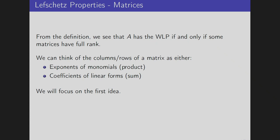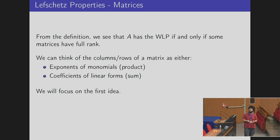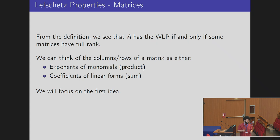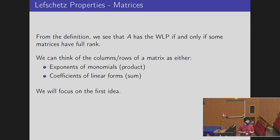Essentially what it boils down to is we want to compute the rank of a matrix and we want it to be full rank. The main idea we are going to use is that we can think of the columns or rows of a matrix as either exponents of monomials — in which case we get a product structure — or we can think of them as coefficients of linear forms. The second one is the more combinatorial one, and using the first one is where we get positive characteristics.